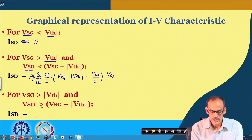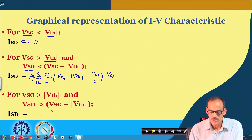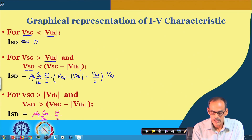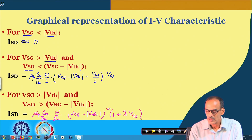On the other hand, if pinch-off is happening — namely if V_SD is more than V_SG minus V_TH — the current has hardly any dependency on V_DS. So the current is (K/2) times W/L times (V_SG minus V_TH)^2 multiplied by (1 plus lambda times V_SD).